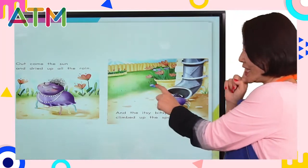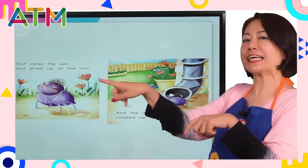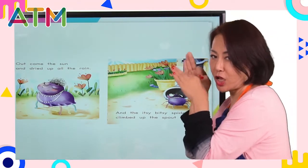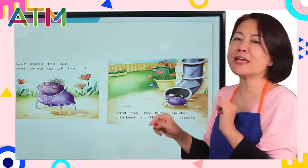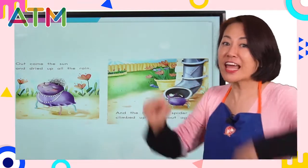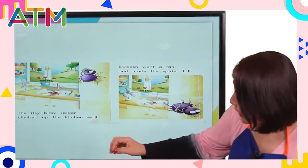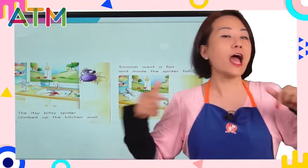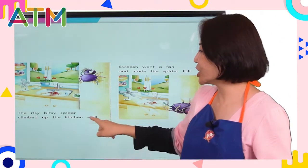Look! There's a friend — I think it's a caterpillar. The caterpillar watched the spider climb up the water spout. Maybe this caterpillar said, Go! Go! Go! Enjoy! So this Itsy Bitsy Spider came up the water spout. And the Itsy Bitsy Spider not only climbed up the water spout — she climbed up the kitchen wall.